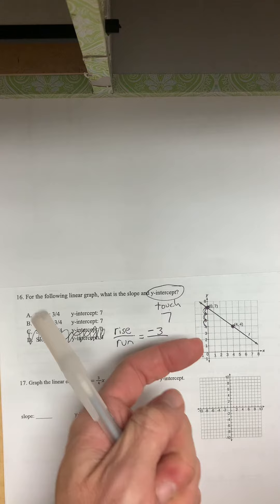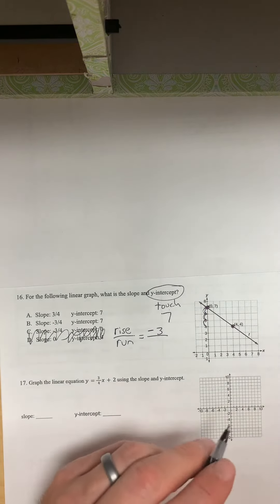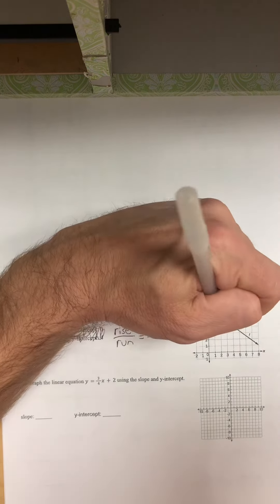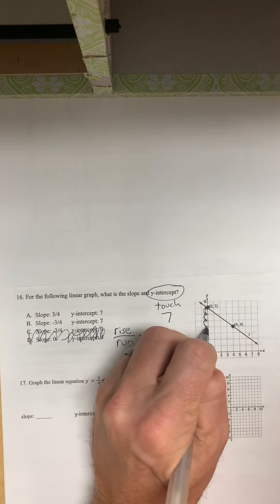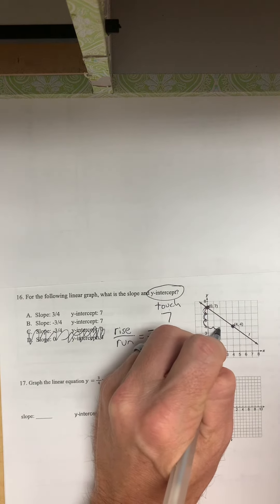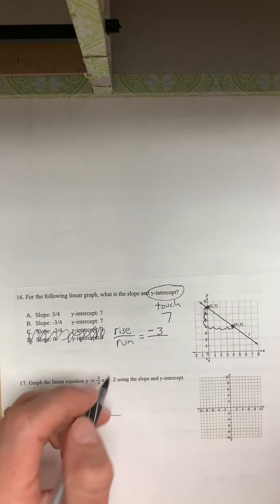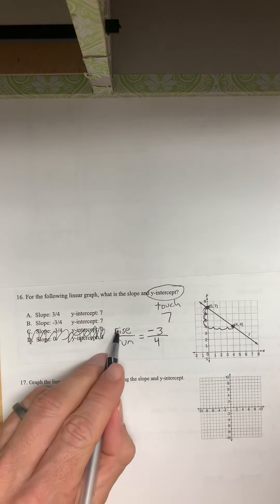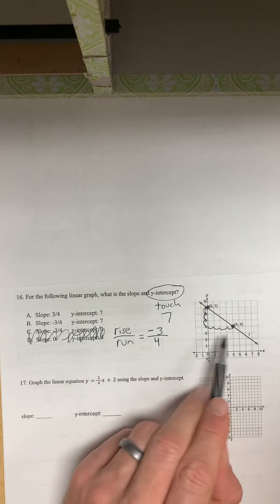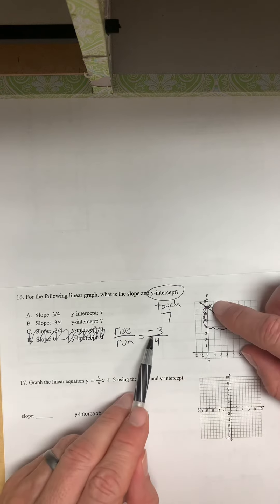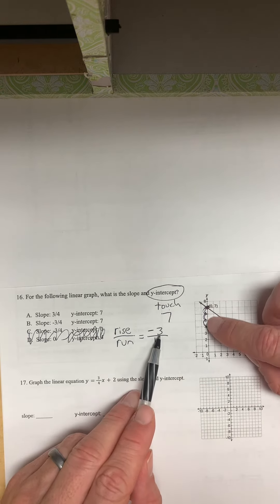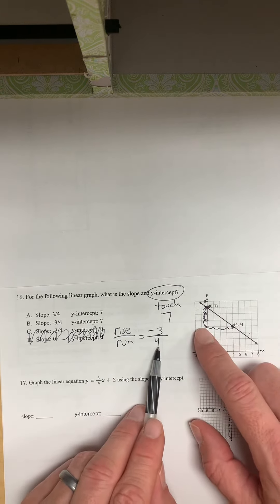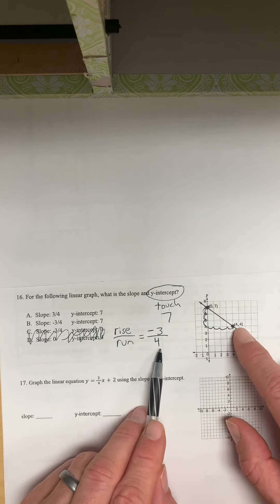And then the run is how far over to the right you have to go before you get to the point. So how far do we have to go to the right? Let's see. 1, 2, 3, 4. So we had to go over 4. So our rise over run, to get from this point to this point, we had to go down 3, and we had to go over to the right 4.